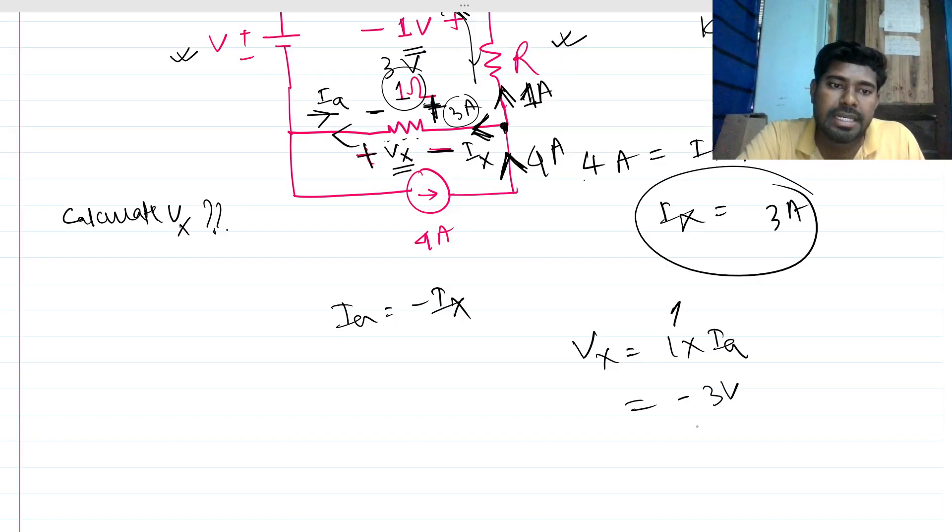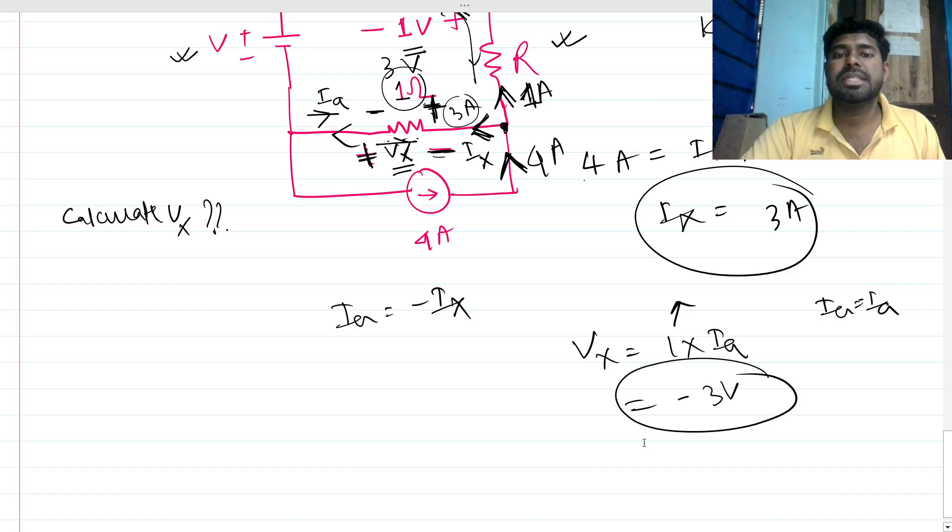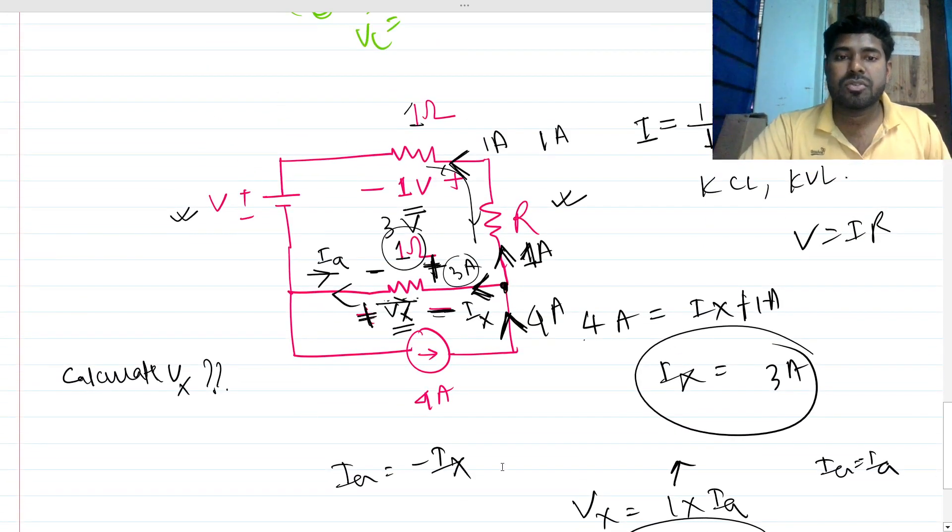This is one-ohm resistance and this is IA flowing through that branch, so it will be positive here and negative here. But we are seeing that this IA is nothing but minus Ix, right? So our vx will be negative 3 volts.